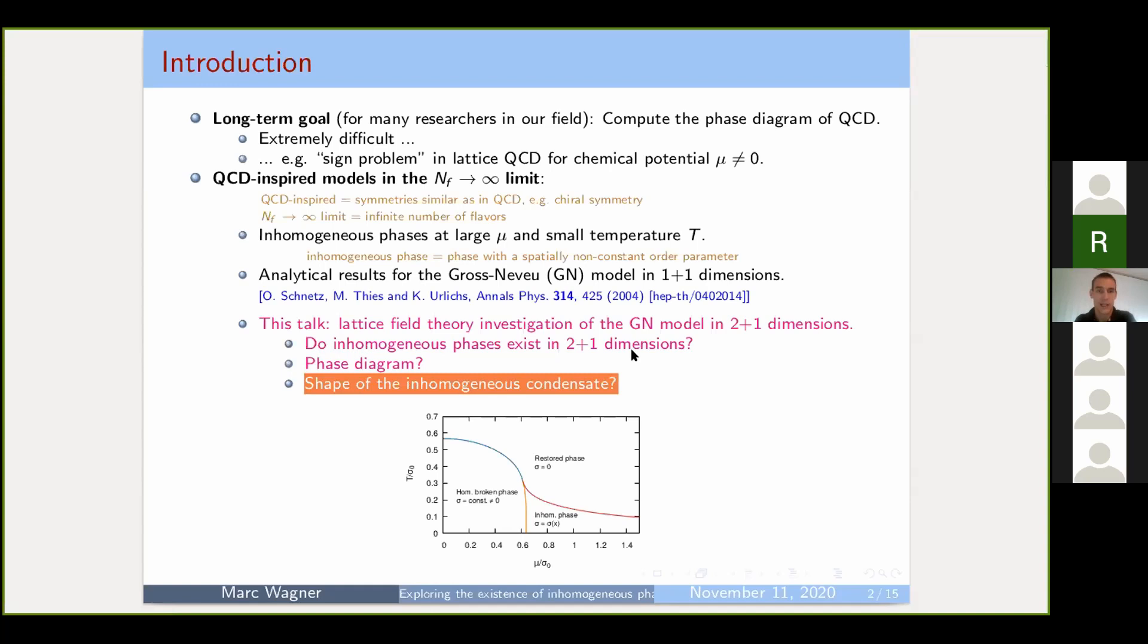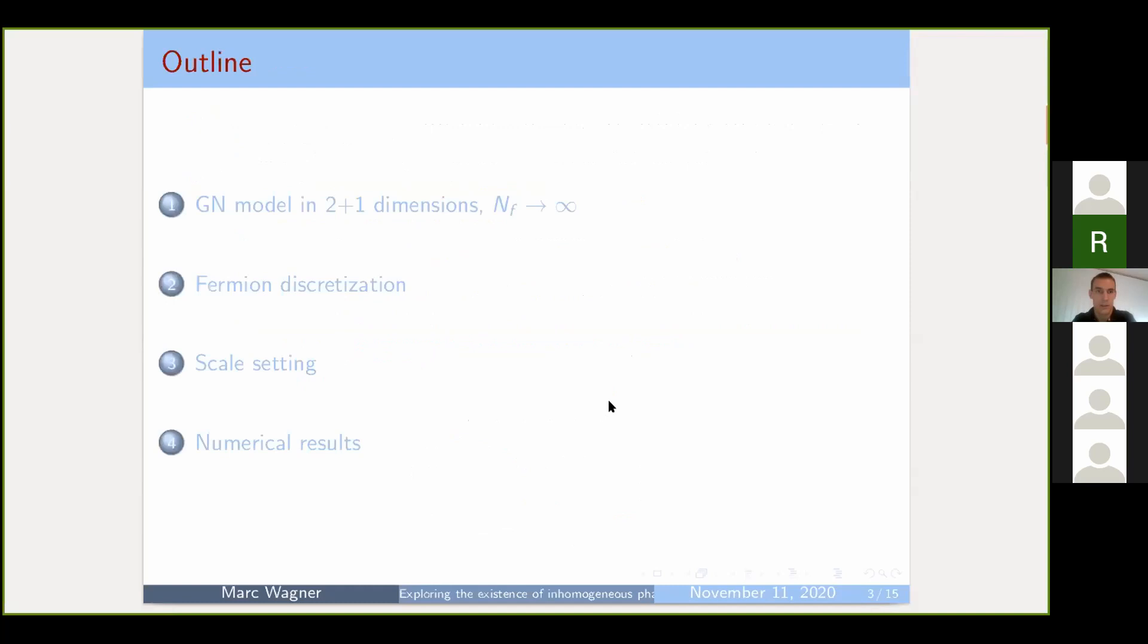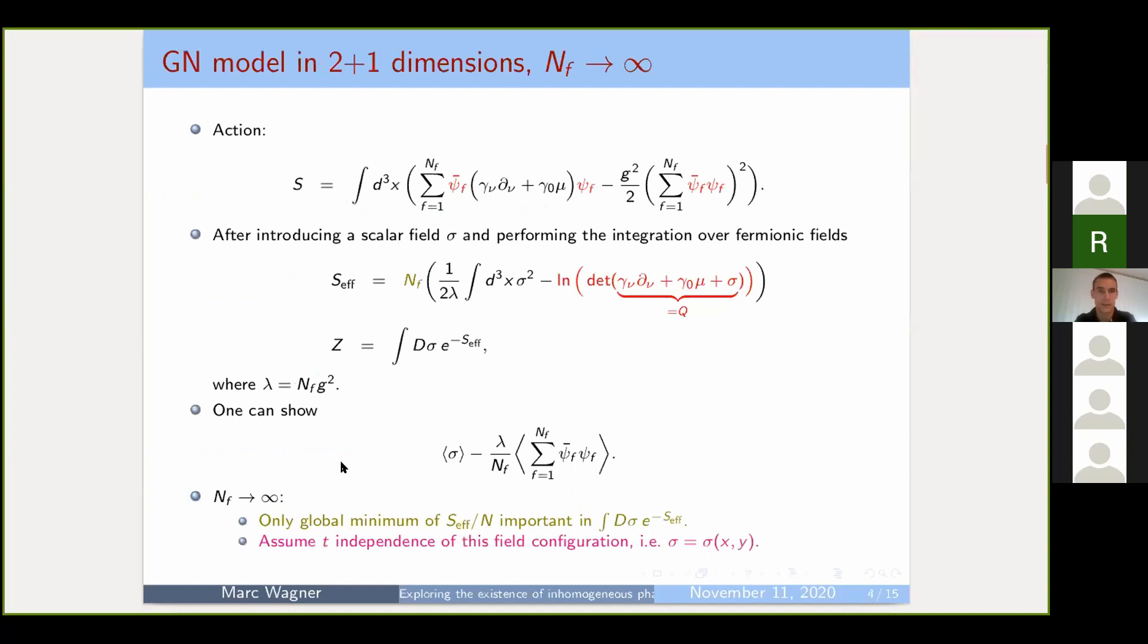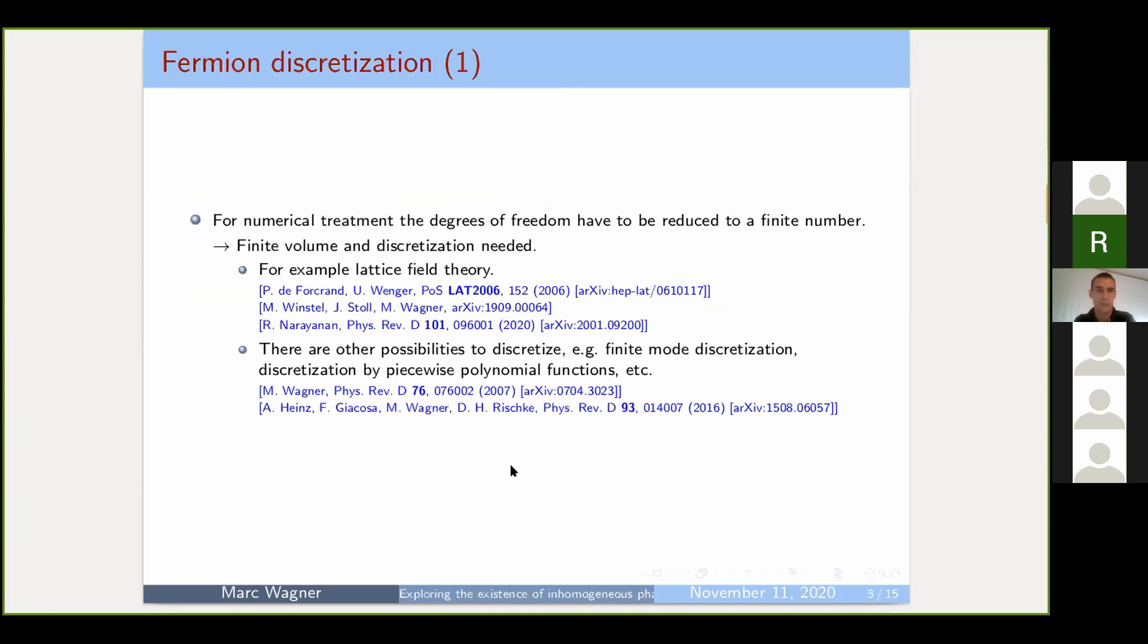For example, you can see what is the shape of the inhomogeneous condensate in an inhomogeneous phase. I'll mostly speak about points two and four. I'll talk about the lattice discretization so you understand what kind of regulator and discretization we're using, and then about numerical results. This is a backup slide which defines the model. Leonard did this already.